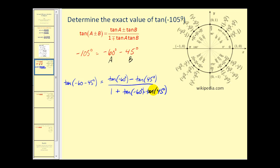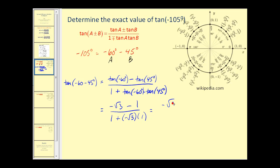Now we find these tangent values. Tangent of negative 60 degrees: using the unit circle where tangent θ equals y over x, we get negative √3/2 divided by 1/2, which equals negative √3. Tangent of 45 degrees: y over x equals 1. So the expression becomes negative √3 minus 1 in the numerator, and 1 plus (negative √3)(1) in the denominator, simplifying to negative √3 minus 1 over 1 minus √3.